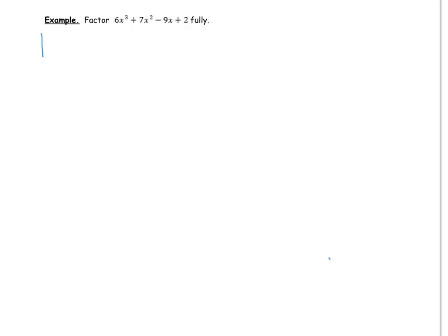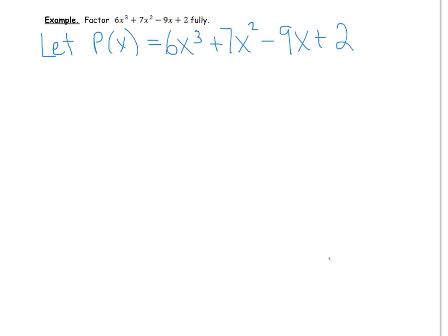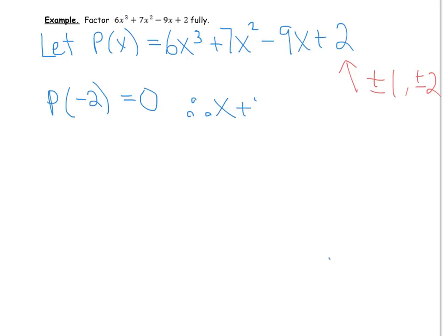Our first step is to write our statement: let p of x equal 6x cubed plus 7x squared minus 9x plus 2. To find our first factor, we look at the plus 2, and we have plus or minus 1 and plus or minus 2 to consider using the remainder theorem. P at 1 clearly is not going to equal 0. I actually know that p at negative 2 equals 0 — you can pause the video and try that out. This means therefore that x plus 2 is a factor.